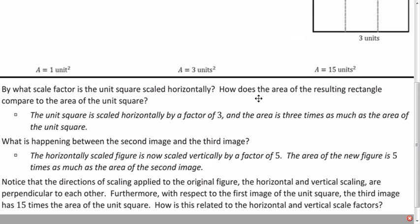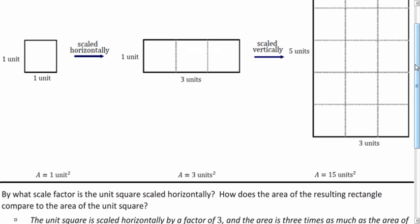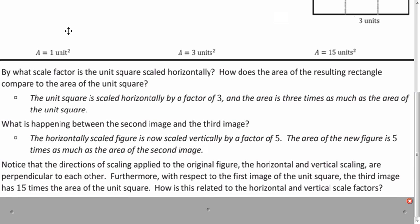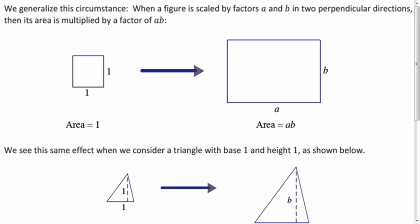Of importance here is that the directions of the scaling are perpendicular to each other, right? The horizontal and the vertical are perpendicular, or orthogonal is another word for saying that they're perpendicular. And with respect to the first square, the third image has 15 times the area of the original. So how is that related to our two scale factors that we found? Our scale factors are 3 and 5. And 15 is the product of those two scale factors. So in general, if we scale by two different factors in perpendicular directions, we would just multiply those two scale factors together to figure out the scale factor for the area.